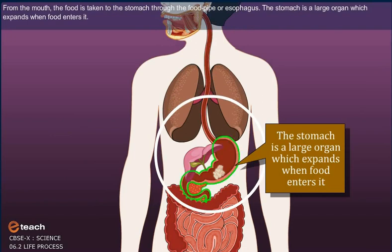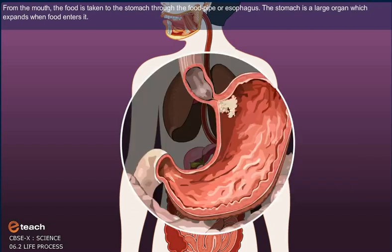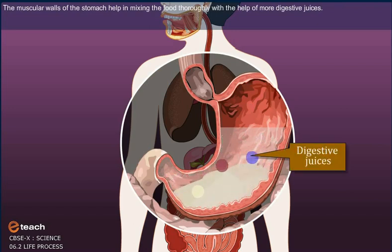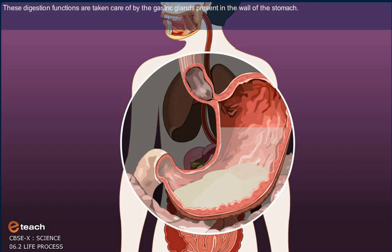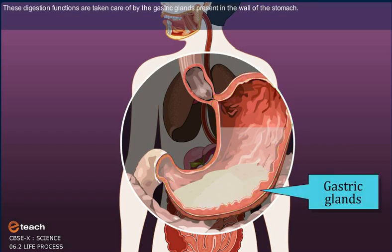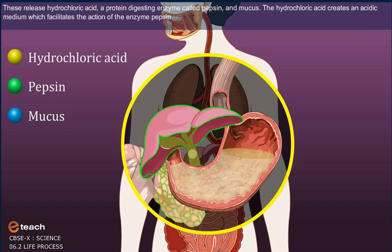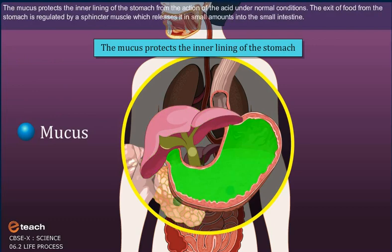The stomach is a large organ which expands when food enters it. The muscular walls of the stomach help in mixing the food thoroughly with more digestive juices. These digestion functions are taken care of by the gastric glands present in the wall of the stomach. These release hydrochloric acid, a protein-digesting enzyme called pepsin, and mucus. The hydrochloric acid creates an acidic medium which facilitates the action of the enzyme pepsin. The mucus protects the inner lining of the stomach from the action of the acid under normal conditions.